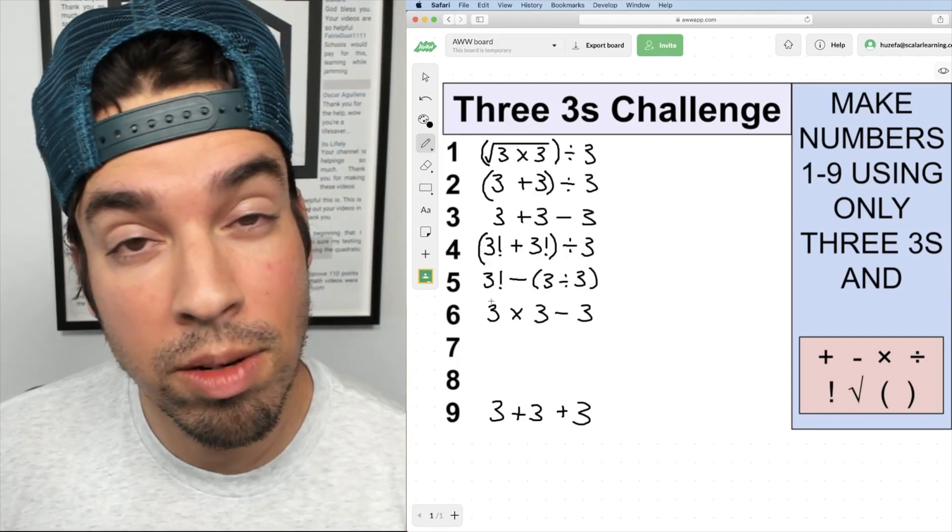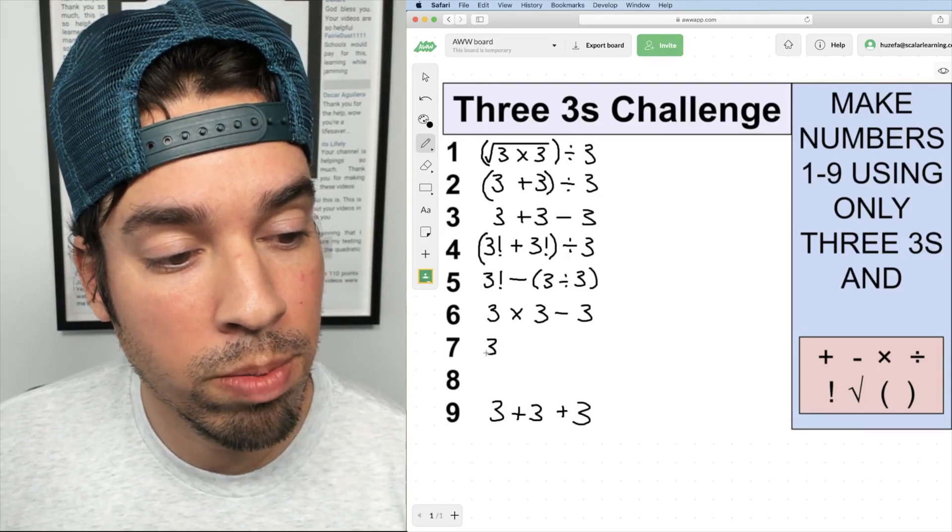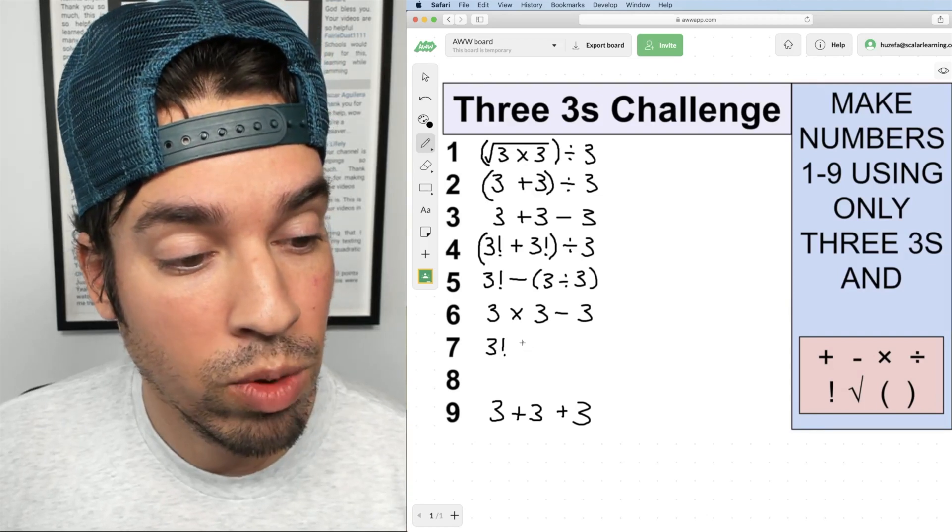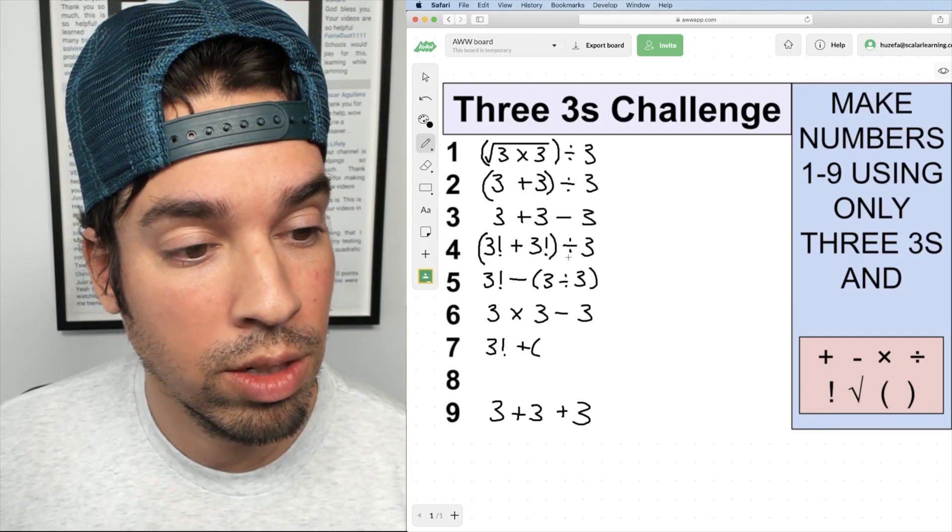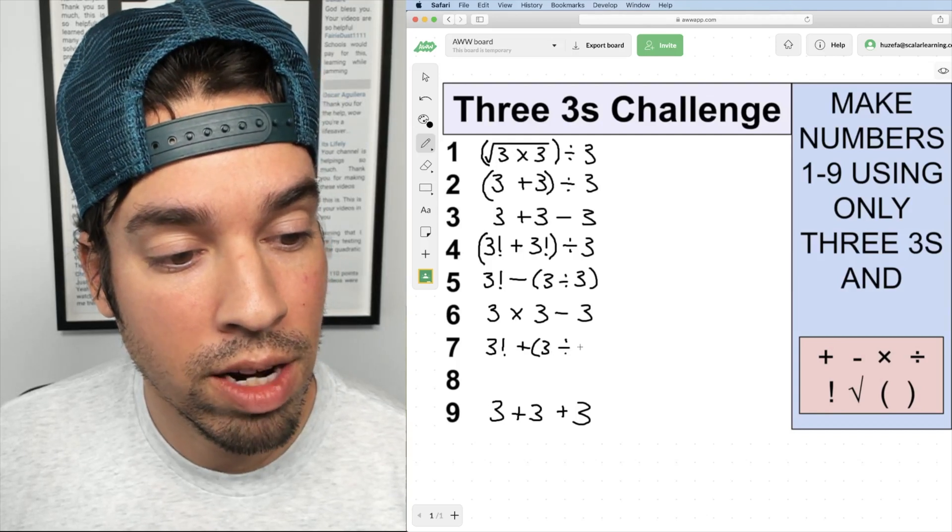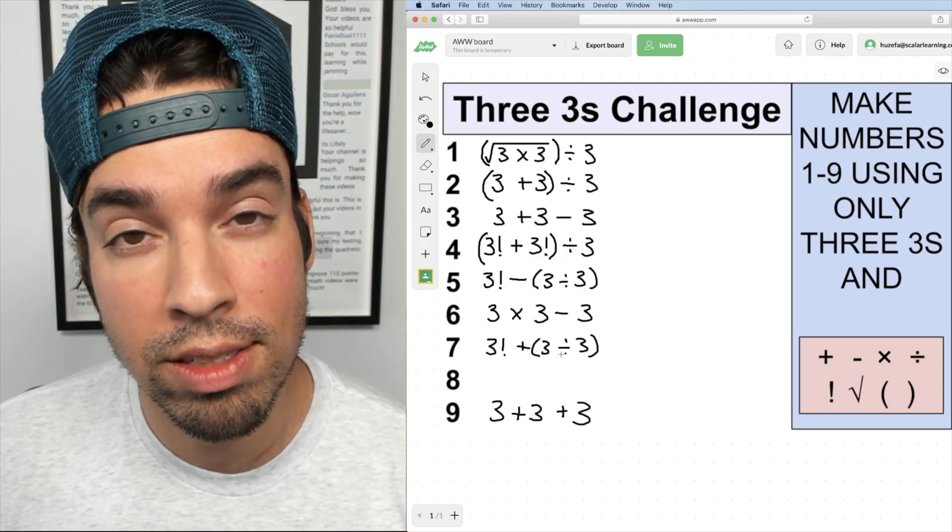Next we come to seven. It's very similar to five, right? It's one away from six. So I'm going to start again with my three factorial and that again gives us six, and then we're going to add, just like we subtracted before, instead I'm going to add three divided by three which is one. So that's six plus one gives us seven.